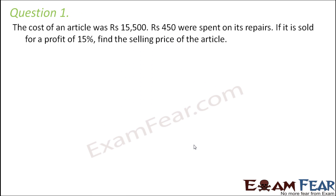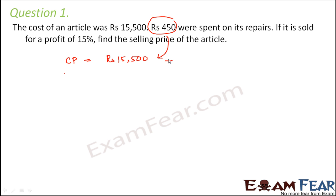Question number 1. The cost of an article was Rs 15,500. Rs 450 were spent on its repairs. If it is sold for a profit of 15%, find the selling price of the article. The cost price is Rs 15,500. Now we have spent Rs 450 on its repairs — this repair cost gets added to the cost price, because you are spending it before selling. So the net cost price would be Rs 15,950.